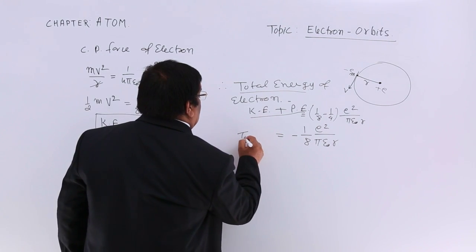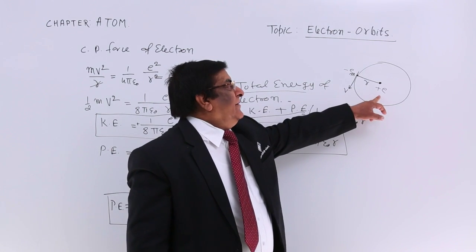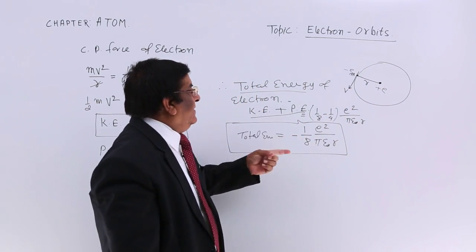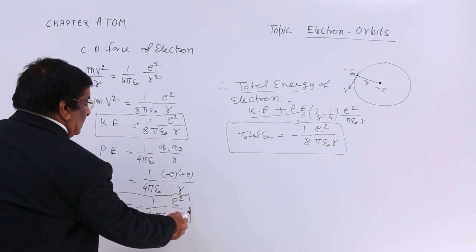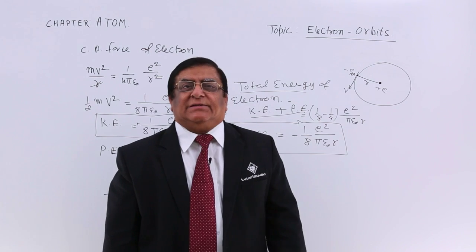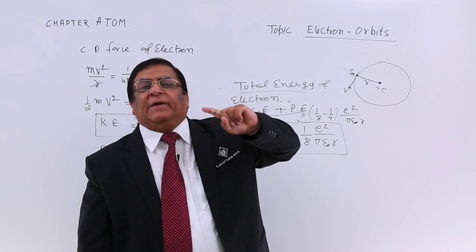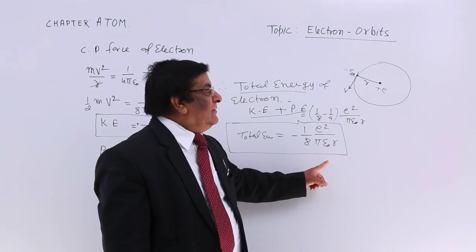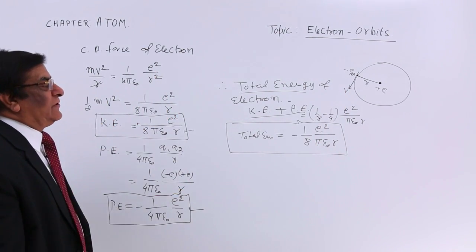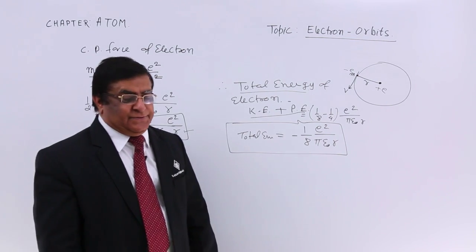According to Rutherford's model of hydrogen, there is a positive charge nucleus with an electron moving around it at radius r. It has potential energy, kinetic energy, and a total energy that carries a negative sign. The negative total energy tells us there is a force of attraction and the electron will always remain in orbit. To release it, we must supply enough positive energy so that the total energy becomes zero, making the electron free. These are the energy equations for electrons, from which we proceed further for different energy levels and different atoms.